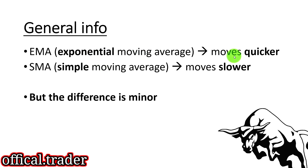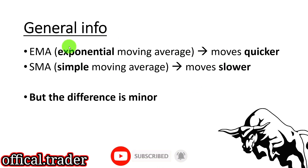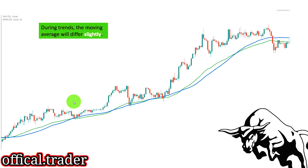EMA stands for exponential moving average. It moves much quicker than the SMA, which is a simple moving average. The EMA puts more weight on the most recent candles and the most recent price action, so it will naturally adjust quicker to changes in price — which can be good or bad. However, the difference between EMA and SMA is generally minor. I've plotted the SMA and EMA 50 on this chart and you can see the moving averages are very, very close together.